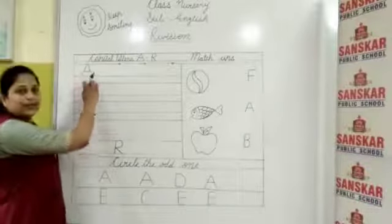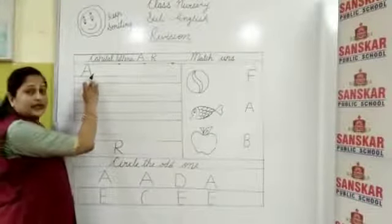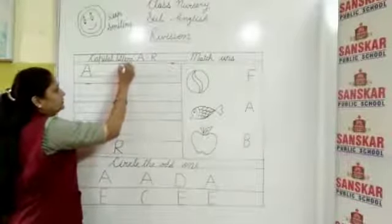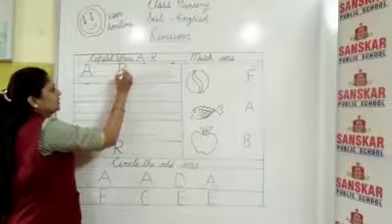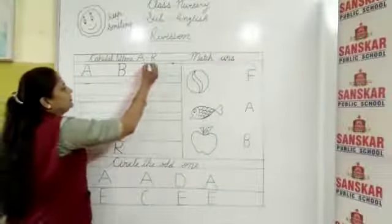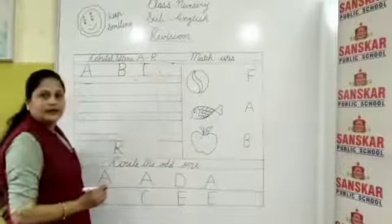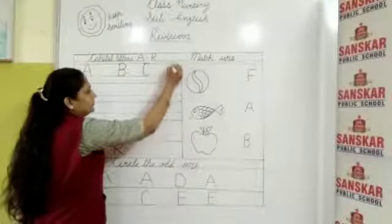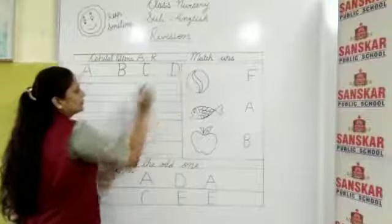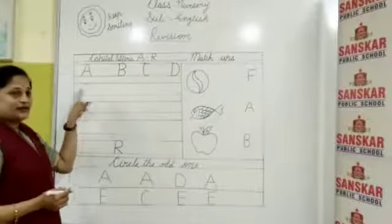This one is capital letter A and what comes after A? Write down capital letter B and after B write down capital C. Next is write down D. And what will we write after D? E.